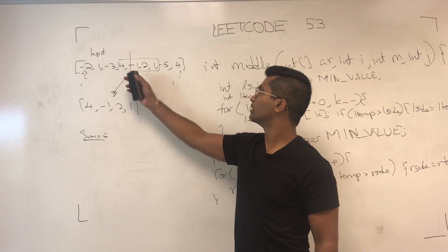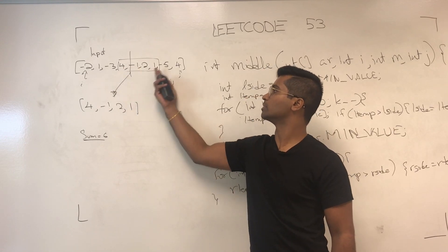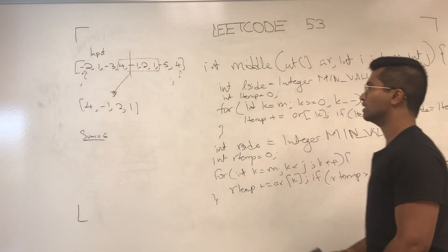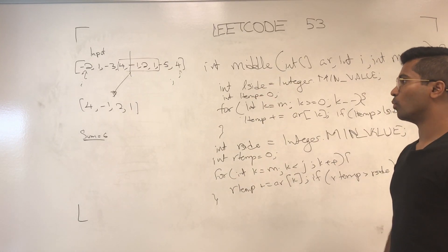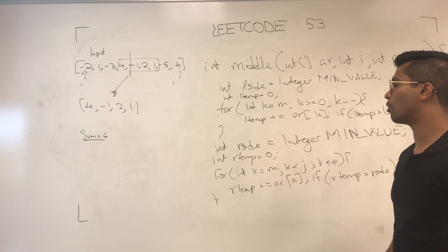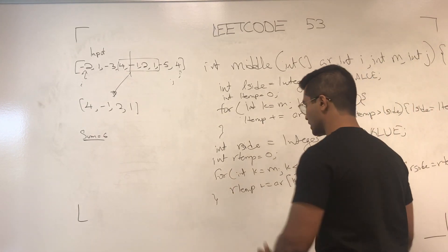Now, negative 1. On the right side, if we start including these numbers, the greatest subarray would be this guy. Now, we have to see which of these two is going to be more optimal, and we send it down the middle.